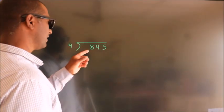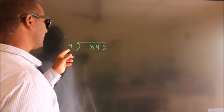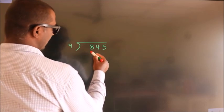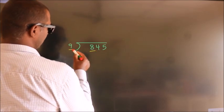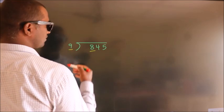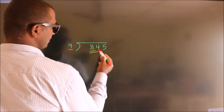How to divide 845 by 9. Here we have 8, here 9. 8 is smaller than 9, so we should take two numbers: 84.